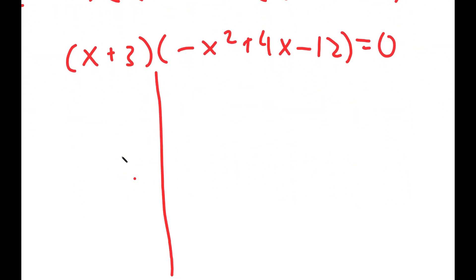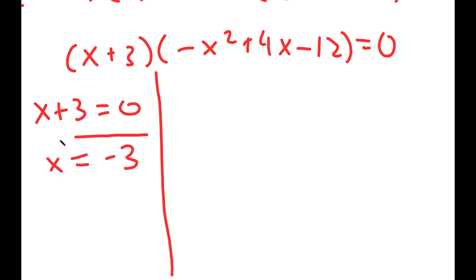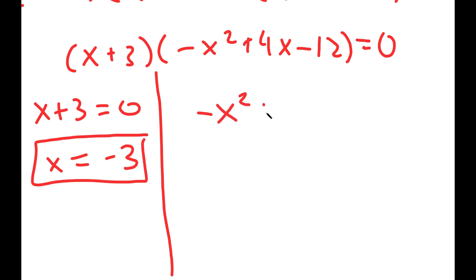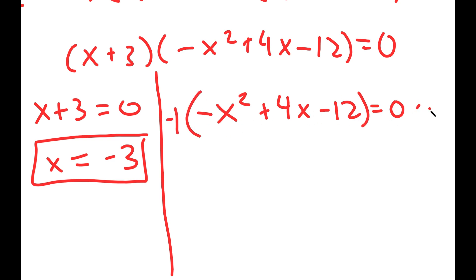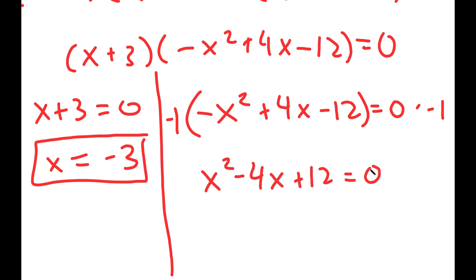This gives me two equations. First, x + 3 = 0, meaning x = -3. Second, negative x squared plus 4x minus 12 = 0; multiplying both sides by negative 1 gives x squared minus 4x plus 12 equals 0.